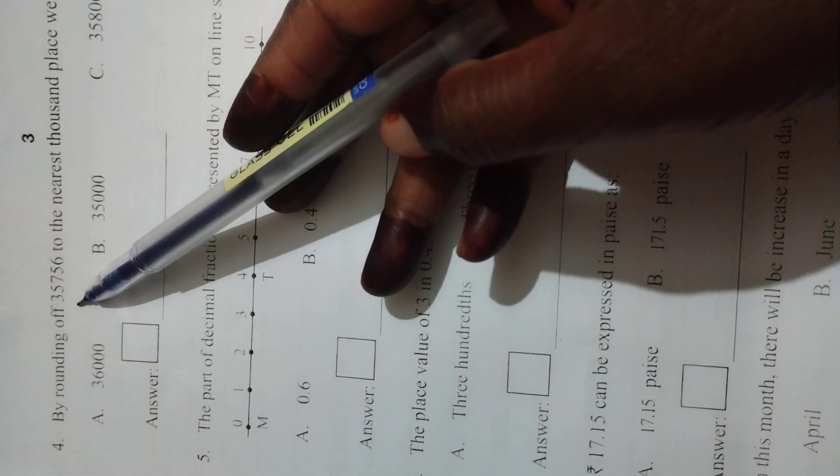Fourth question: by rounding up 35,756 to the nearest thousand place we get. Here given thousand place. Ones, tens, hundred, thousand, ten thousand - we don't need ten thousand place, just we need thousand place. In thousand place after which number? We have 5, so you can change only this number 6. 5 after 6, so in this answer 36,000 is there. A is the correct answer: 36,000.